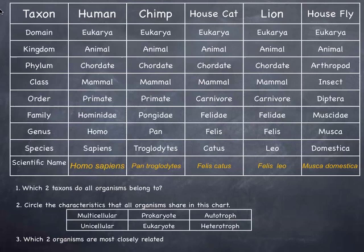Does 'domestica' mean domestic? The Latin word domestica, or domesticus, means 'house' — like having a home. So as we look at these classifications for these various organisms, all of these things belong to the same two taxa: they're all in domain Eukaryota and they're all in kingdom Animalia.